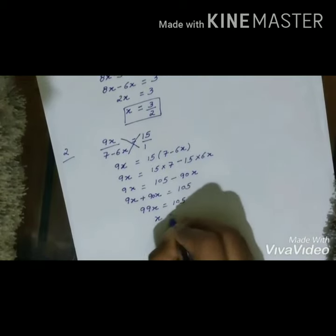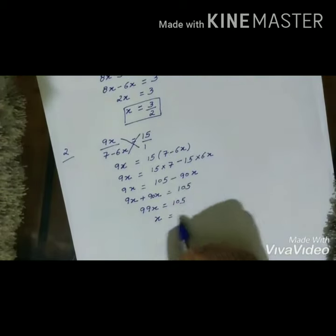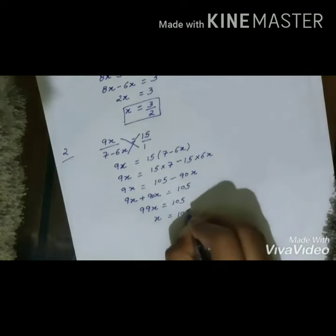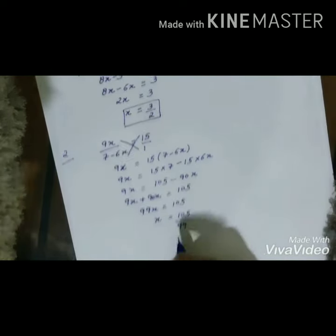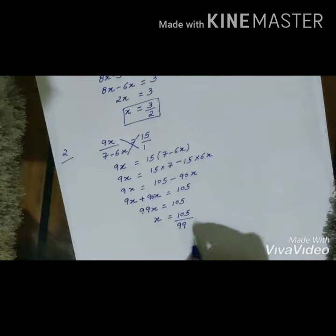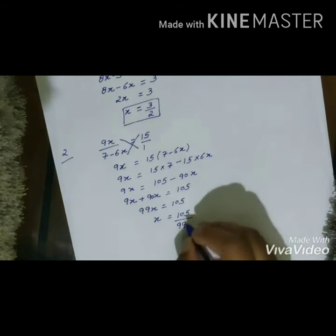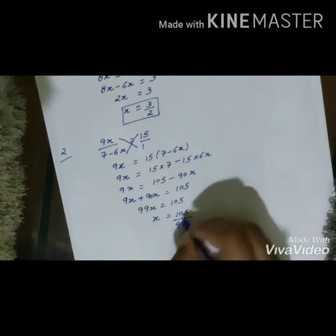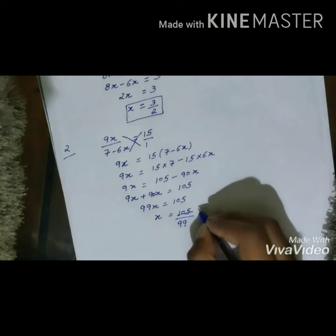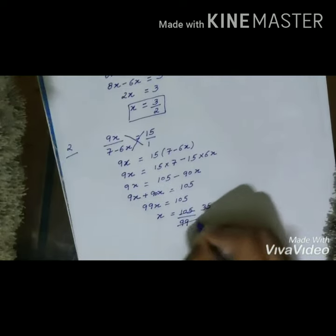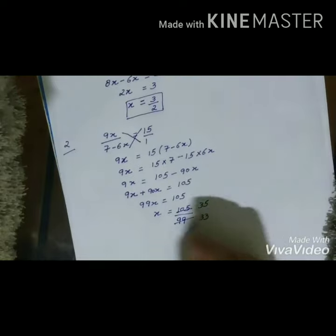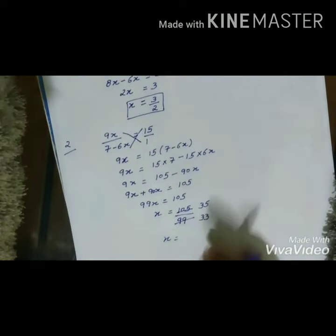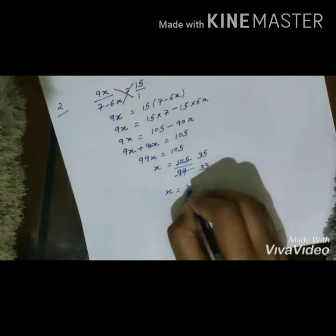Now we need to transpose 99 to RHS, giving x = 105 / 99. It is not in simplest form, so we need to reduce it. Both terms are divided by 3: 105 ÷ 3 = 35, and 99 ÷ 3 = 33. Now it is in simplest form. So our answer will be x = 35/33.